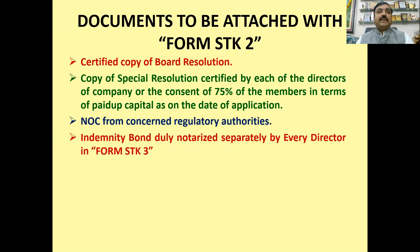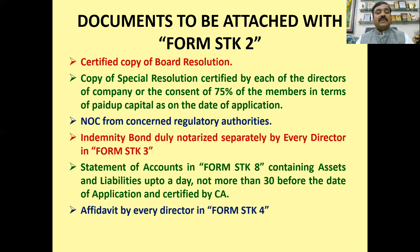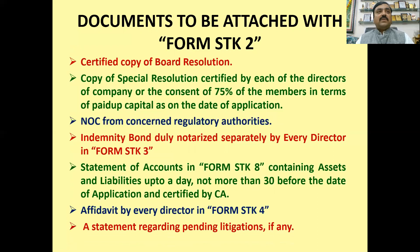Next is the indemnity bond. Every director has to submit an indemnity bond in the form of STK-3, and it should be notarized. The statement of accounts will be in the form of STK-8, in which the company will declare the asset liabilities of the company. That statement should not be older than thirty days from the application date. Also, an affidavit from every director in the form of STK-4 is required, and if there is any litigation pending, then that list will be attached. Once this form is uploaded, your work will be finished for removal of the company.